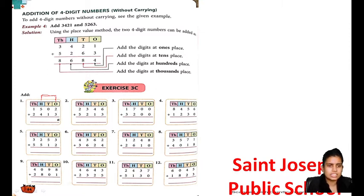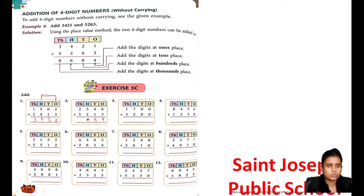2 plus 3 is 5. 0 plus 1 is 1. 5 plus 4 is 9. 2 plus 1 is 3. Again: 6 plus 3 is 9. 4 plus 1 is 5. 3 plus 2 is 5. 2 plus 5 is 7. Then 0, 0. 7 plus 2 is 9, then 4. Understood?